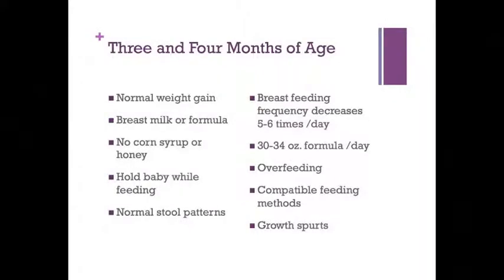Besides reinforcing previous concepts — normal weight gain, benefits of breastfeeding, maternal health during breastfeeding, avoiding corn syrup or honey, holding the baby while feeding, identifying stool patterns, compatible feeding methods, colic, and feeding during growth spurts — additional topics for infants three and four months of age include a decrease in necessary feeding frequency down to five or six times in a 24-hour period. If the infant cries for more frequent feedings, discuss possible reasons and solutions. Average intake of iron-fortified formula is 30 to 34 ounces per 24 hours. Parents should still watch for the child to indicate fullness, and the infant should not be overfed.